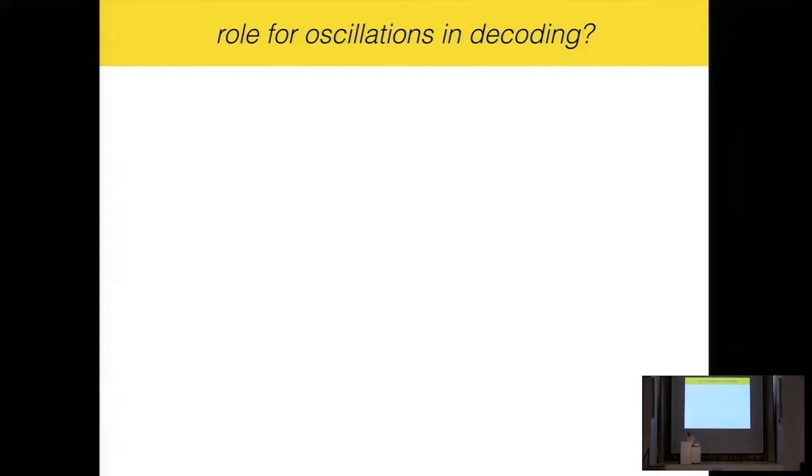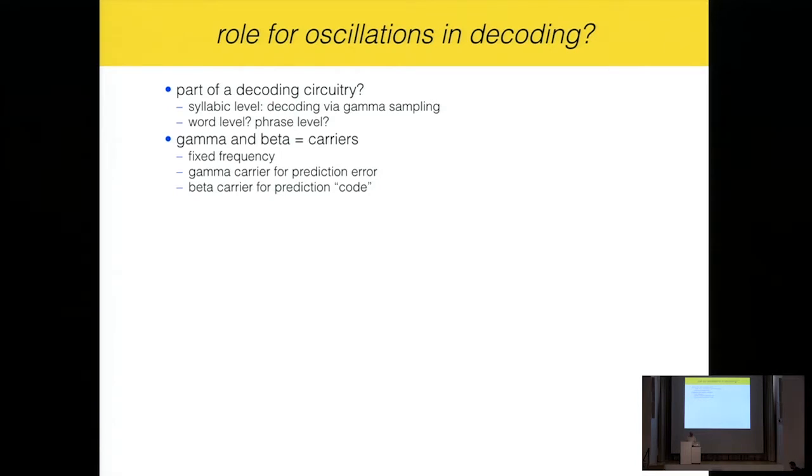So basically that enables communications between different areas in different time scales. In the syllabic scale, these objects are transferred at the end of theta cycles. In the words, and the same with words and phrases. Finally, role of oscillations in decoding. This is something that I think is an issue. Are oscillations involved in decoding? In the syllabic level, we have that model, the gamma sampling of the envelope. But what happens in the word level, in the phrase level? And in that sense, the gamma and the beta, I should say, serve as carriers with fixed frequencies of the carriers, where the gamma carrier carries prediction error information and the beta carrier carries prediction in code, the way that Bastiansen was suggesting to tell us when to stop the integration. So, in that I finished my questions and what bothers me in terms of what is it that needs to be answered in much further details. Thank you.